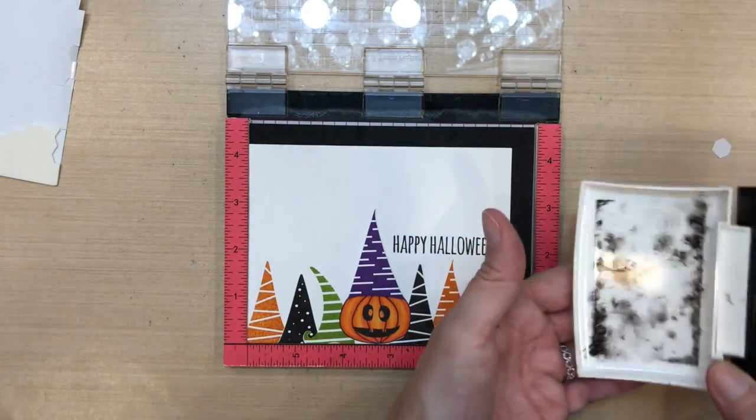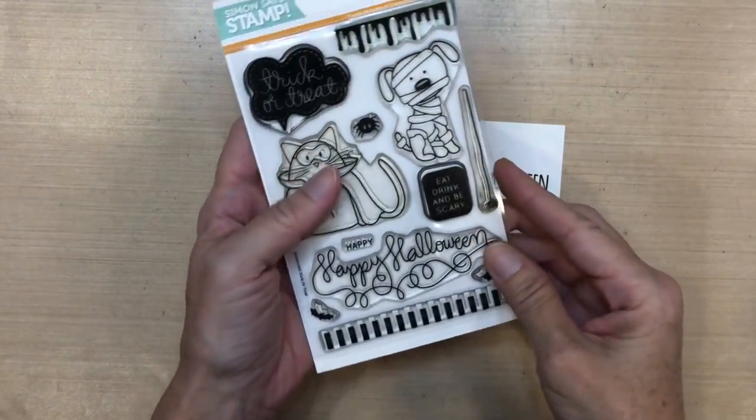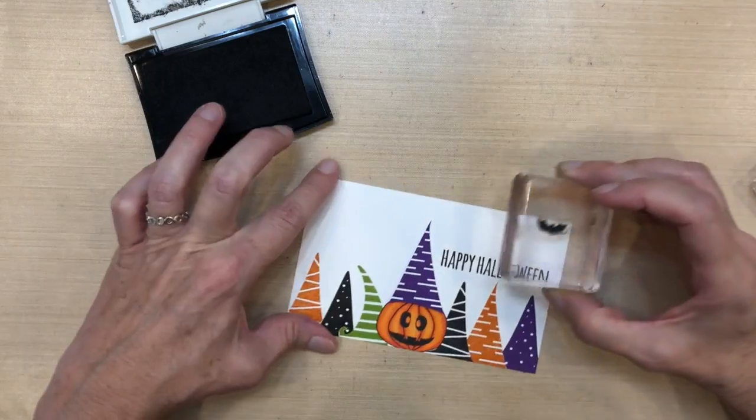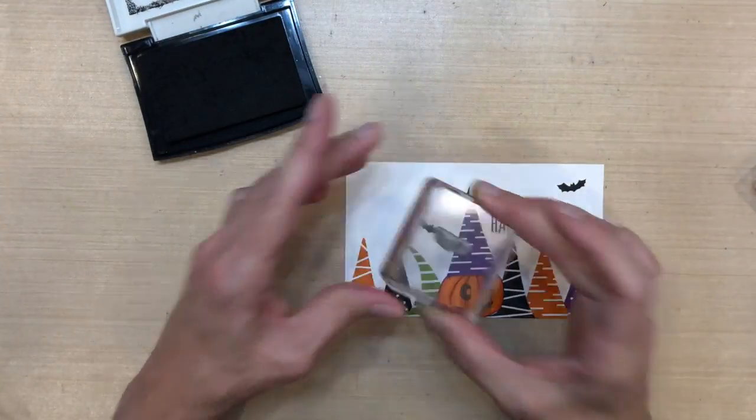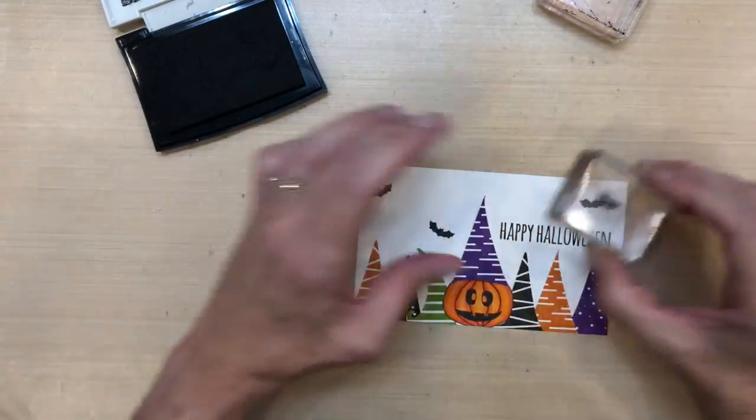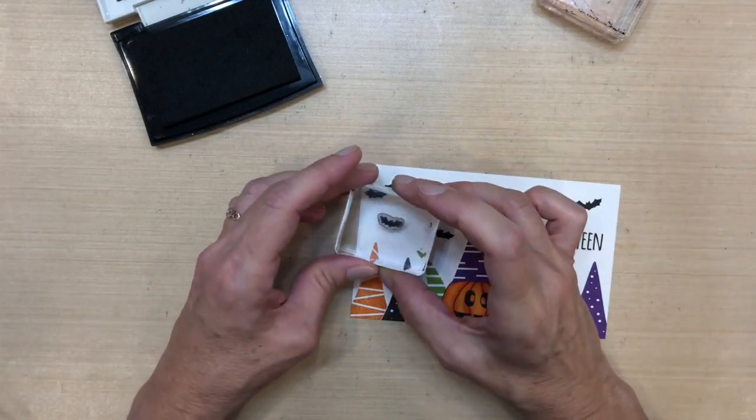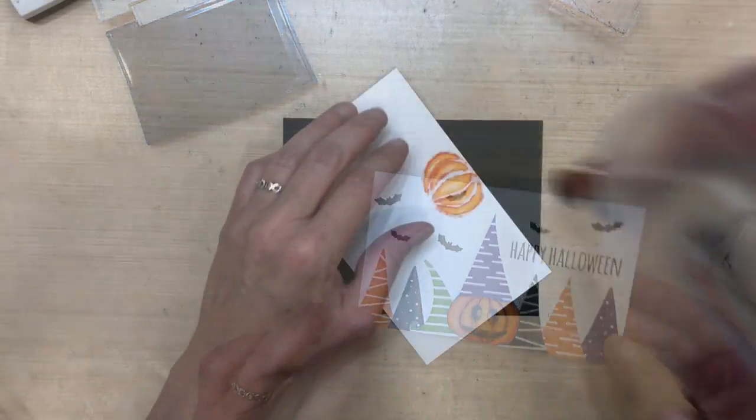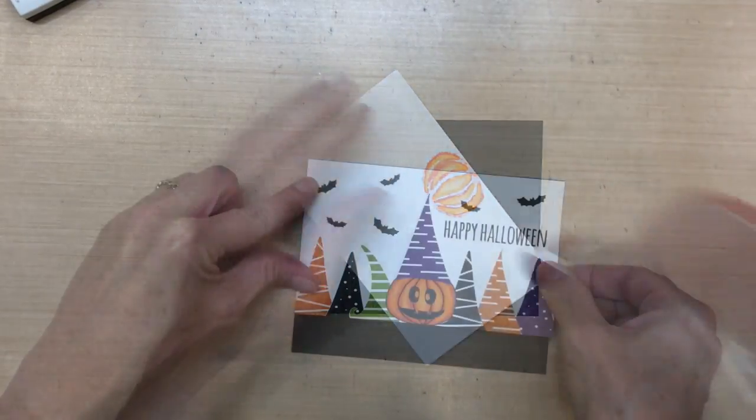There are some cute bats in this Trick or Treat set by Simon Says Stamp. So I'm just gonna randomly stamp them. There's kind of a small one and a smaller one. So I'm just gonna randomly place them just to kind of fill that white area just a little bit. And that'll be it for this panel. So I'll put some ATG tape runner on the back.